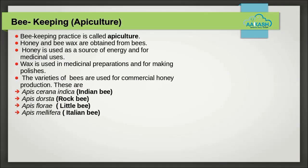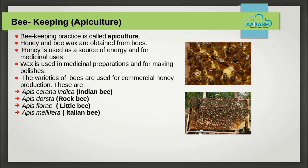Beekeeping (Apiculture): honey is an economically important product obtained from honey bees. Beekeeping practice is called apiculture and is done for both honey and beeswax. Honey has various medicinal values, and wax is used in medicinal preparations and polishes. Varieties of bees used for commercial honey production include: Apis cerana indica (Indian bee), Apis dorsata (rock bee), Apis florea (little bee), and Apis mellifera (Italian bee). The Italian variety has high honey collection capacity. Bees collect nectar from flowers and convert it into honey in bee hives. They are grown in apiaries and honey is extracted by machine called honey extractors.